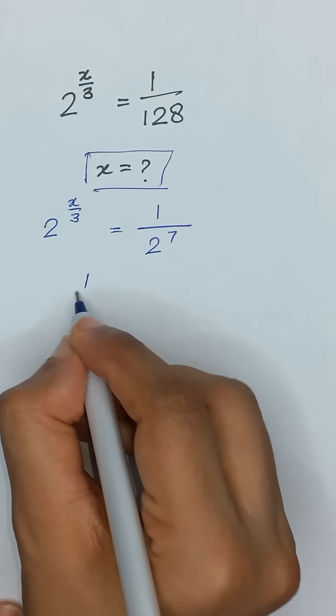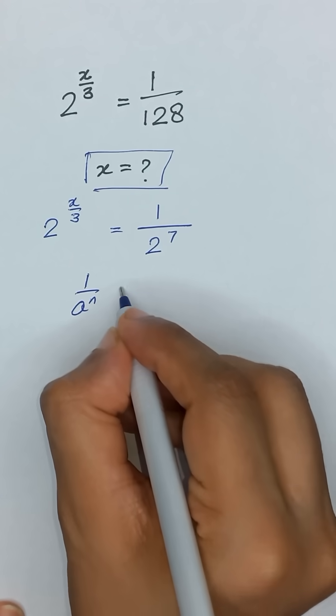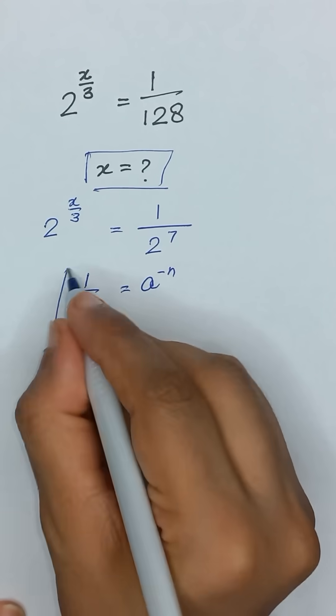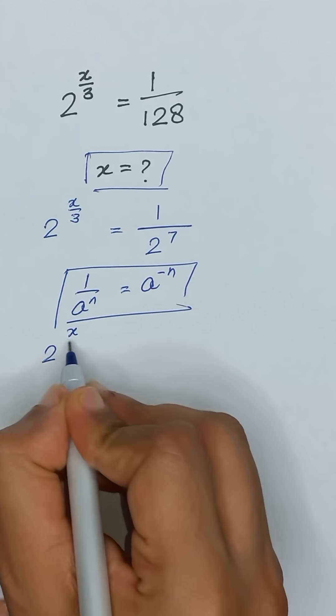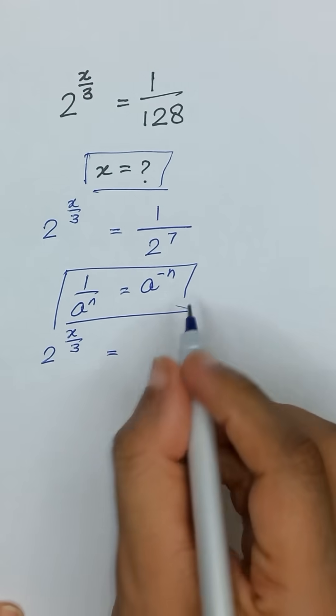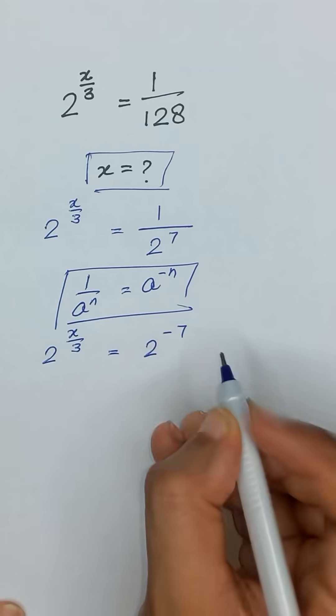And we know that 1 divided by a to the power n is equal to a to the power minus n. So it will become 2 to the power x divided by 3 is equal to 2 to the power minus 7.